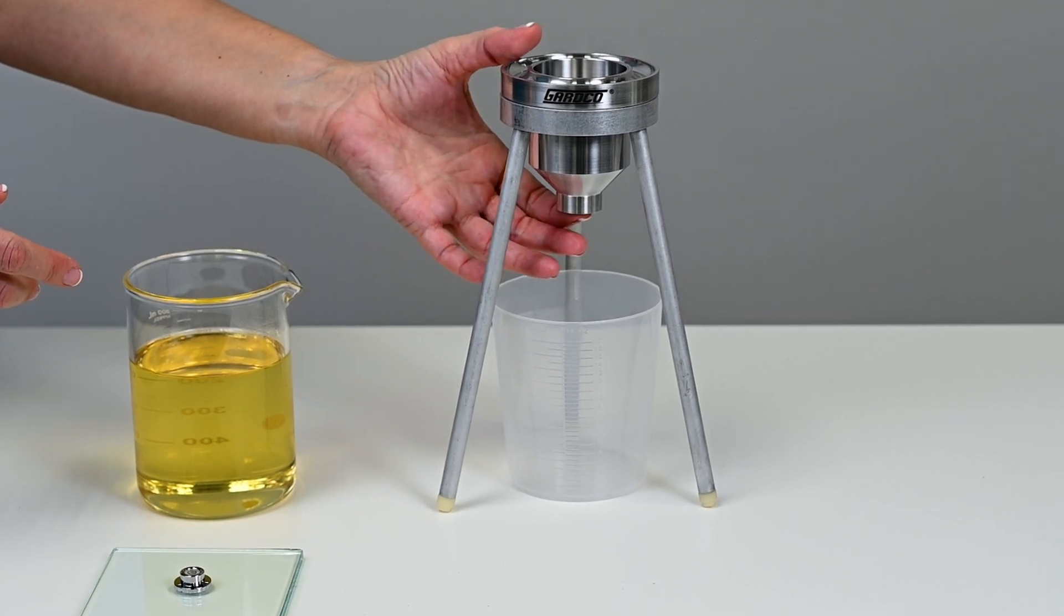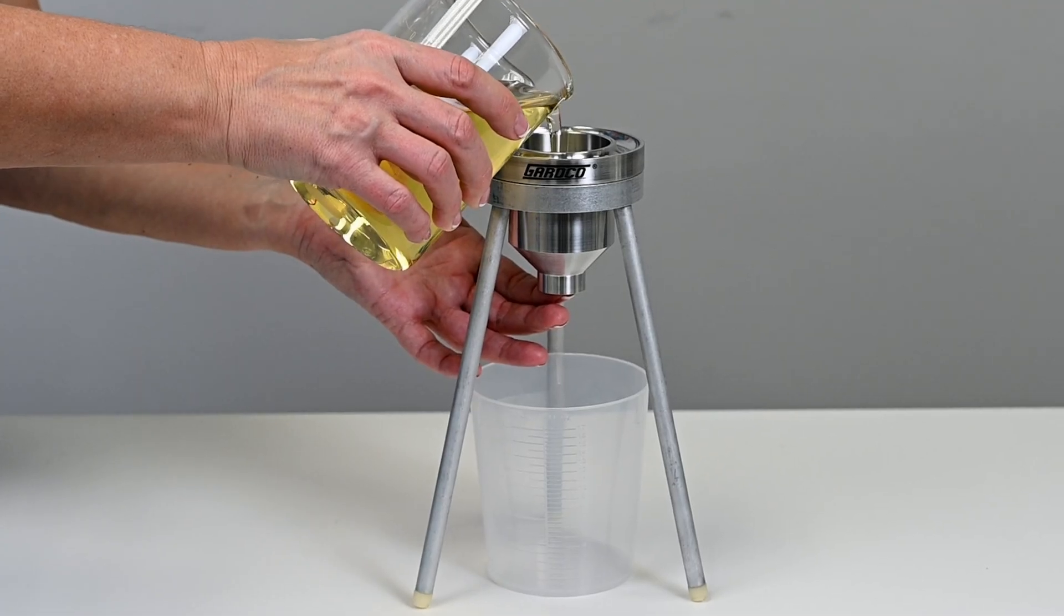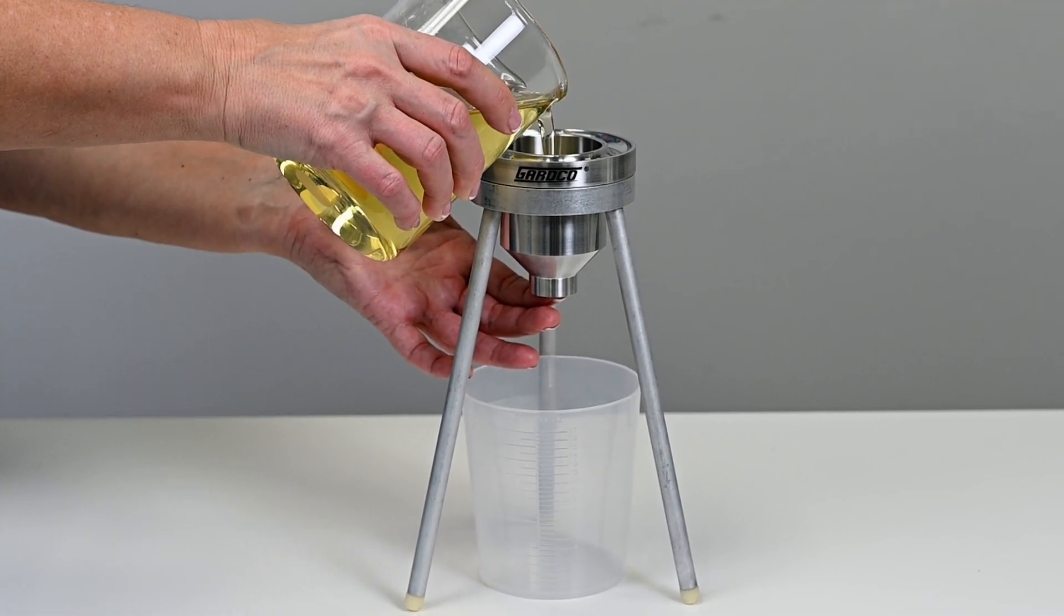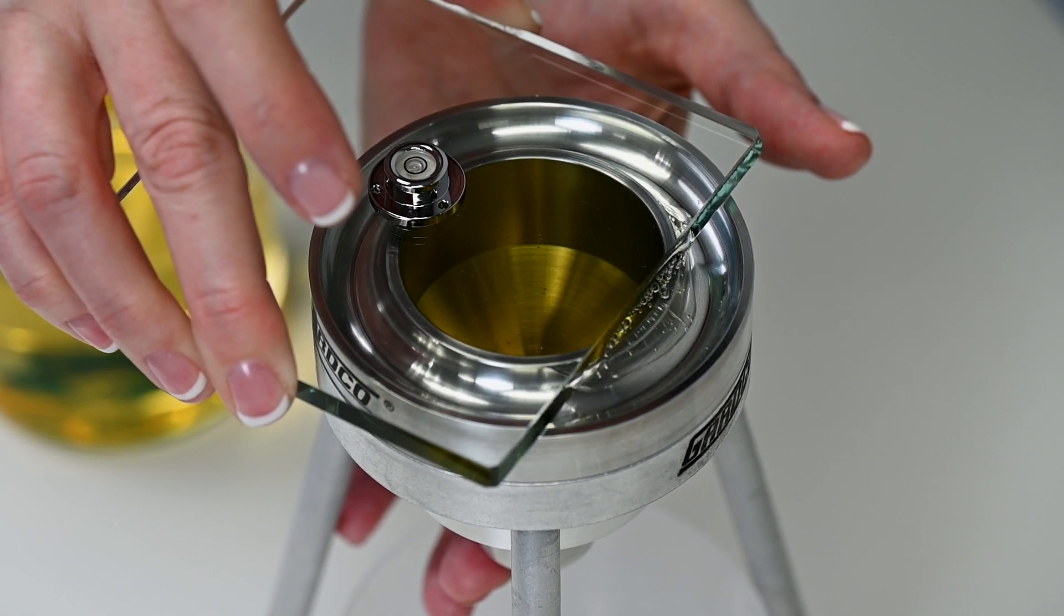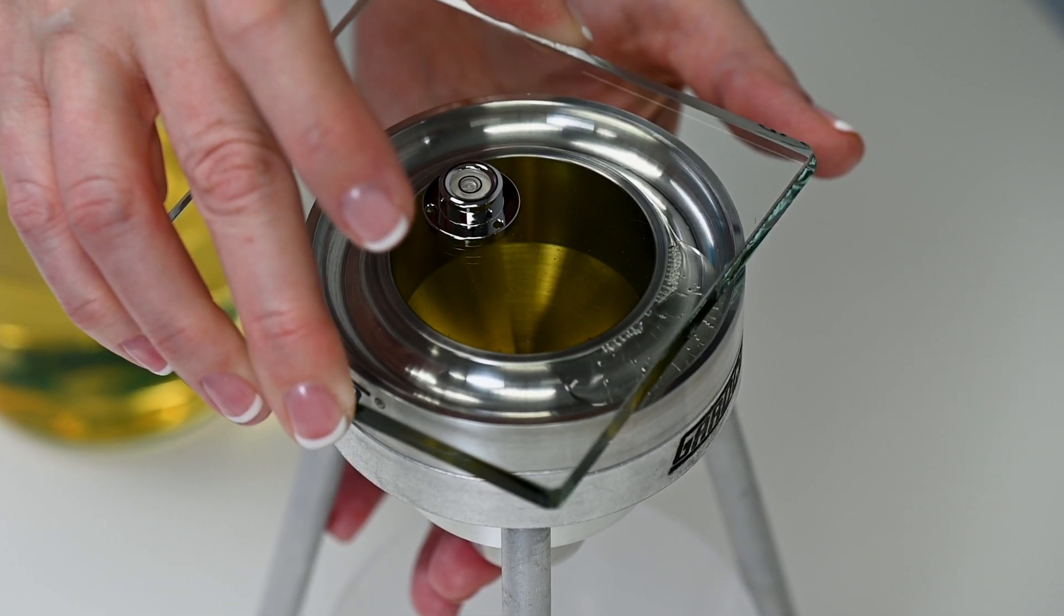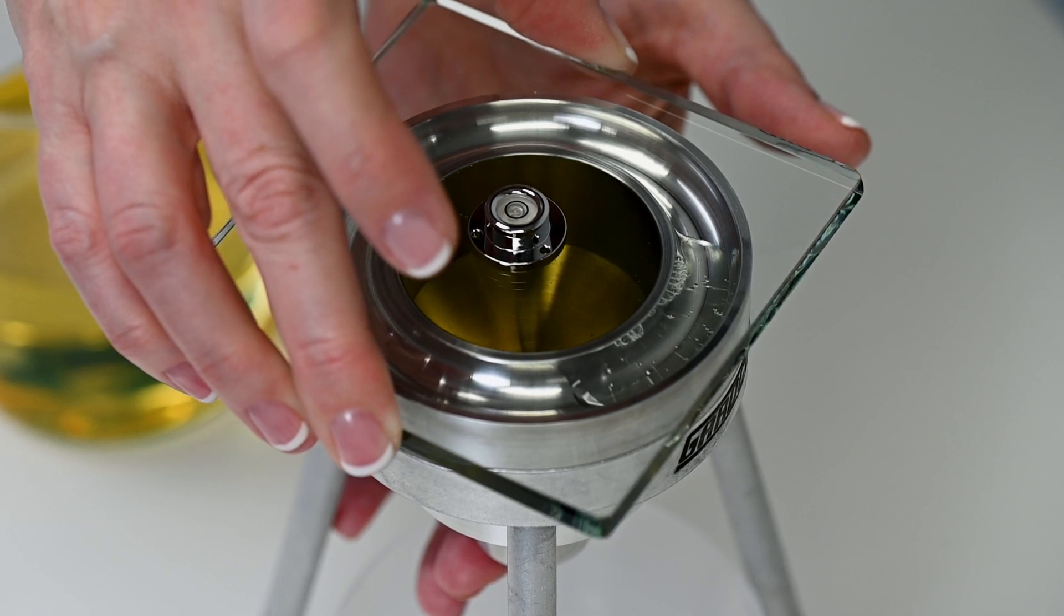Place a finger under the cup orifice and slightly overfill it with the test material. Slide the glass cover over the edge of the cup to scrape off any excess material and leave it on the top of the cup, creating a vacuum.